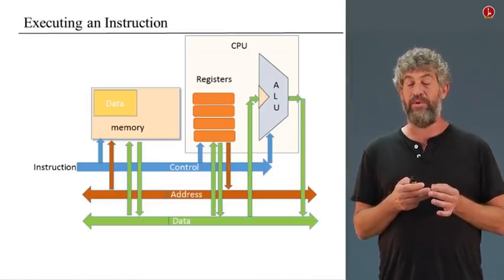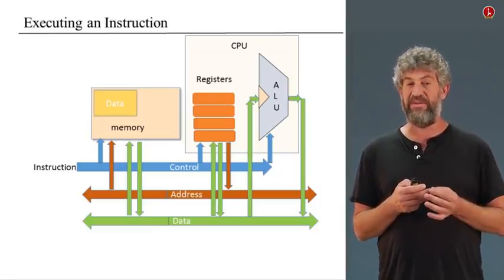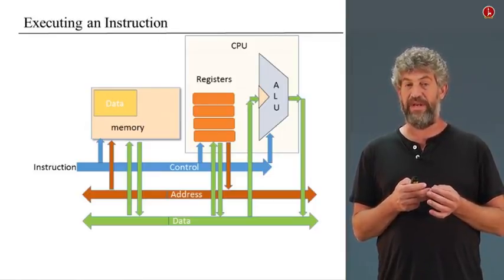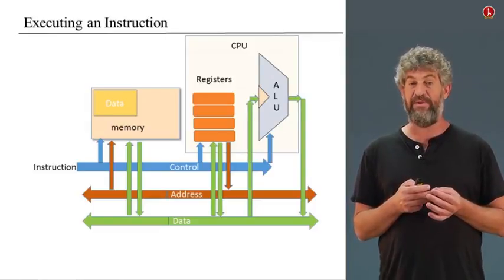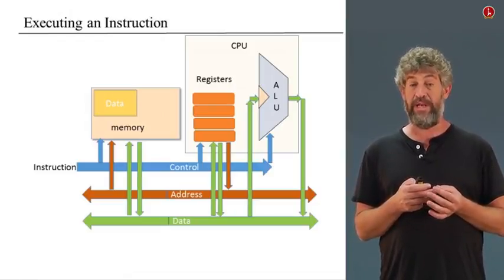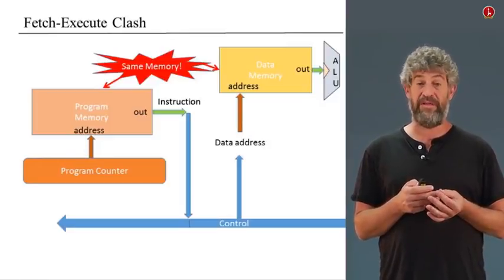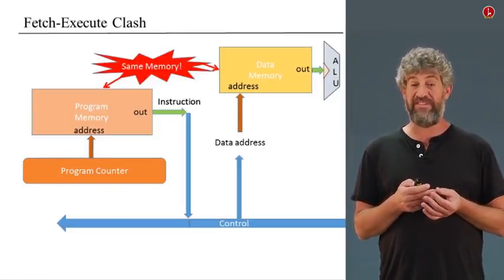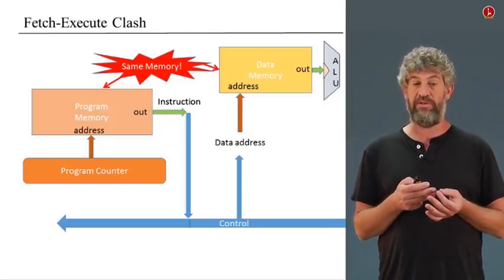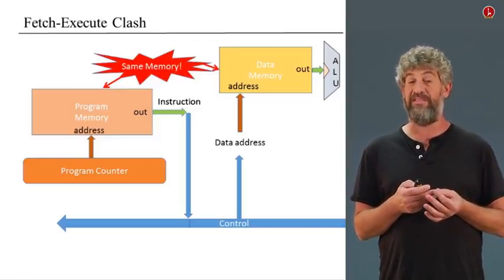There is a clash between the fetch cycle and the execute cycle. Both the program and the data reside in memory. In the fetch cycle, we need to get the next instruction from program memory, so we put the address of the next instruction into the memory's address input and get the instruction as output. On the other hand, in the execute cycle, we need to access data that also resides in memory — we put the data address into memory, which has nothing to do with the instruction address. Because we have a single memory, that is a clash: what do we put into the address — the instruction address or the data address? We need to do both, and that's a problem.